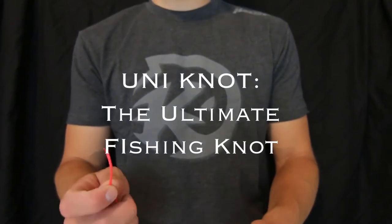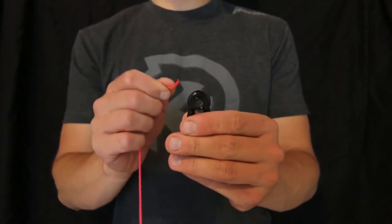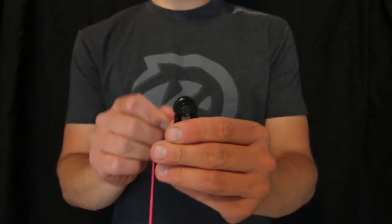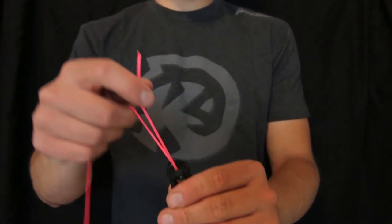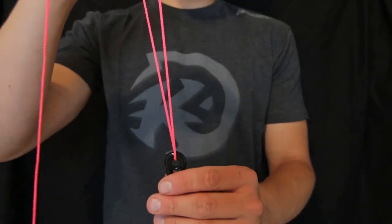We're going to start by showing you how to attach your line to your hook. So this is your eyelet. Go ahead and thread this through the eye of the hook. Pull a pretty long tag right here.